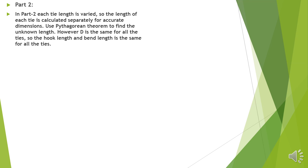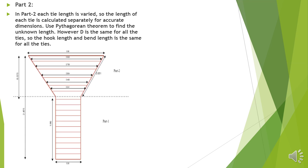The length of each tie is calculated separately for accurate dimensions using Pythagoras theorem to find the unknown length. However, since the diameter is the same for all ties, the hook length and bend length are the same for all ties, but the perimeter length varies. The ties in the inclined portion, at 100 mm center to center, will require 5 ties. This is part two of the calculation.